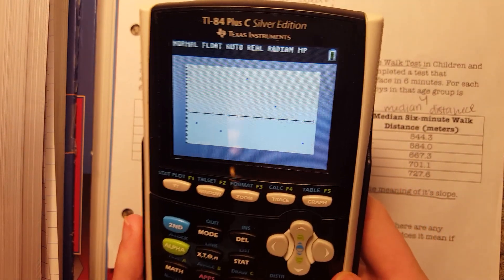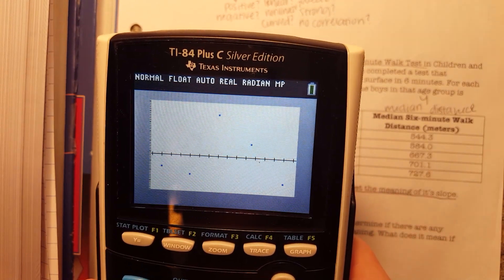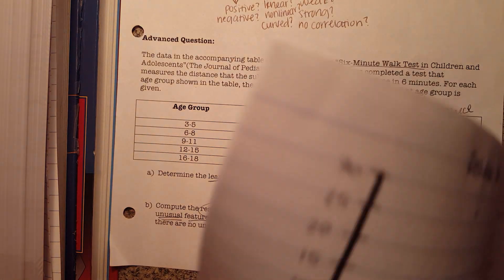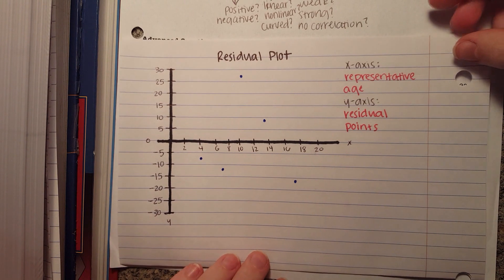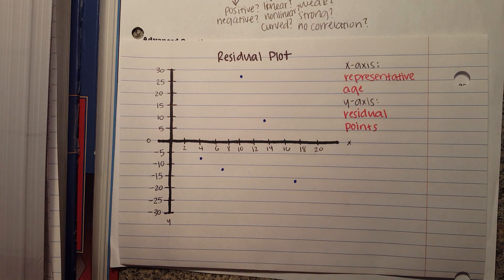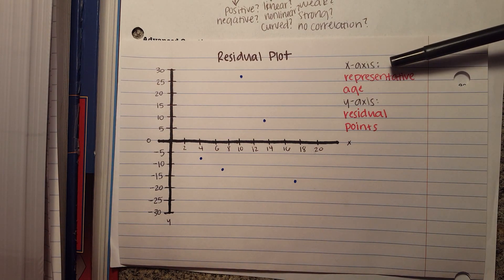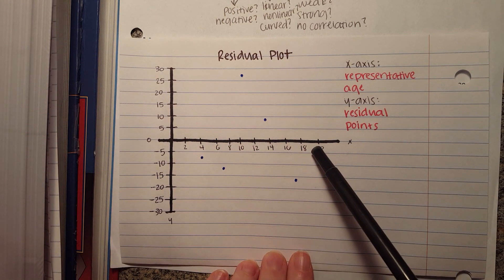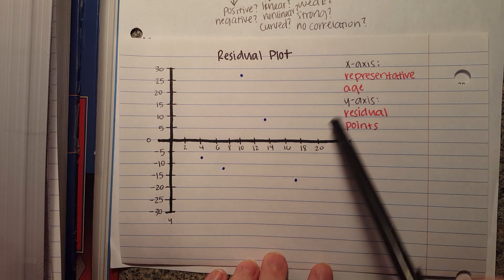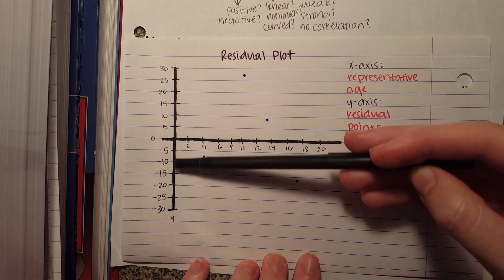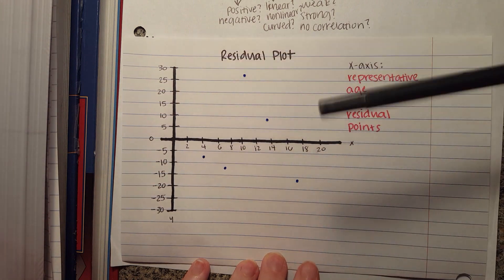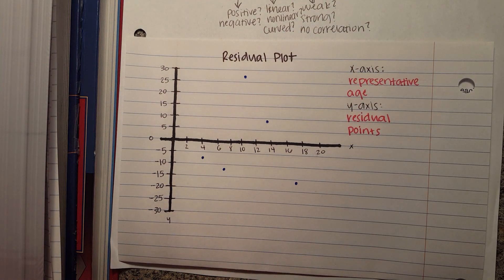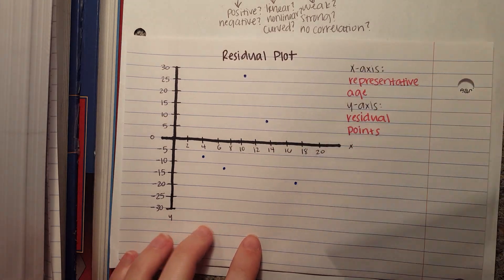We graph that, and here is our residual graph on the calculator. I also did it by hand. The x axis represents the representative ages of the boys, and the y axis represents your residual points. Residuals are essentially the observed minus the predicted values. There are five points here.